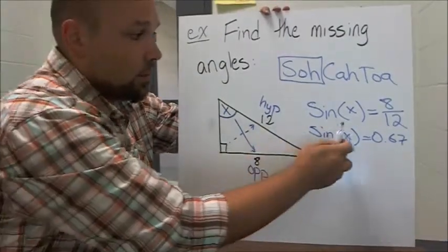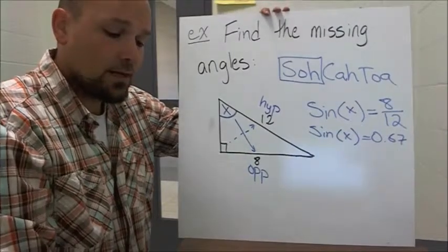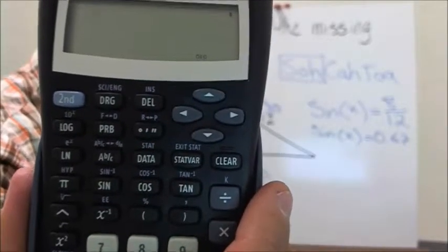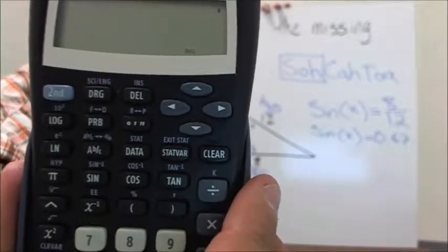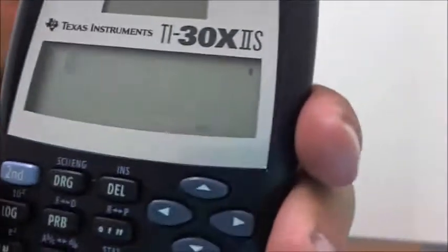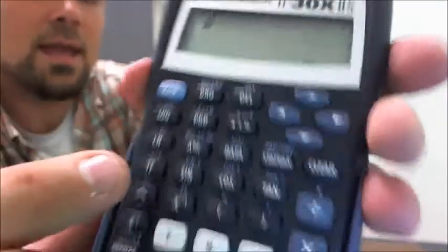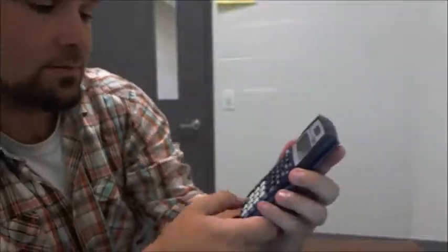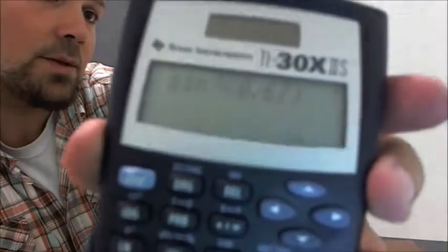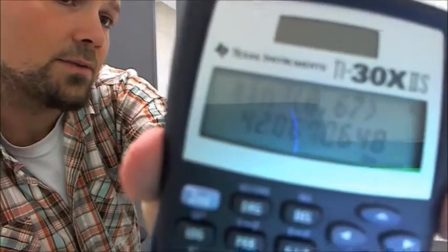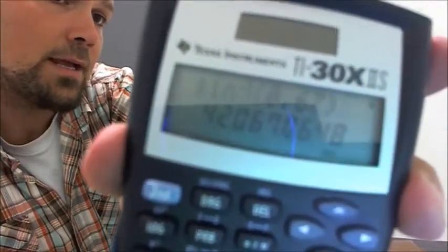Now, to figure out what x is, all we have to do in our calculator is we have to do sine inverse. So on your calculator you'll see a sine button, and right above the sine button it says sine inverse, that's sine negative 1, so to get to that, we have to press the second function button. So second, and then sine, and then we're going to type in 0.67. So I did second, sine, 0.67, and when I hit enter, there's my answer, 42 degrees. So the answer is 42 degrees.